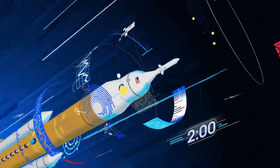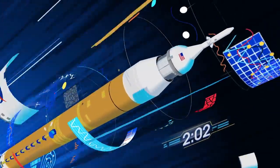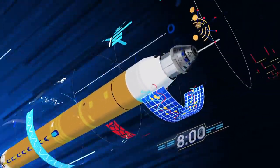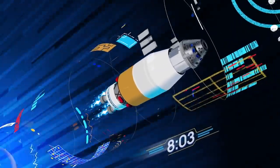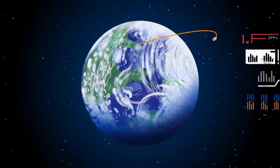Two minutes after ignition, the solid rocket boosters are spent and released. Eight minutes after launch, the core stage is depleted and separated. The upper stage fires briefly, placing Orion into a parking orbit around the Earth.